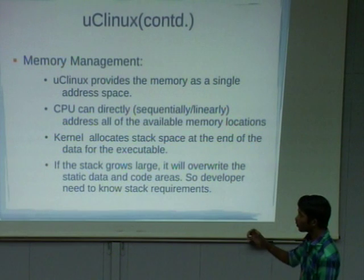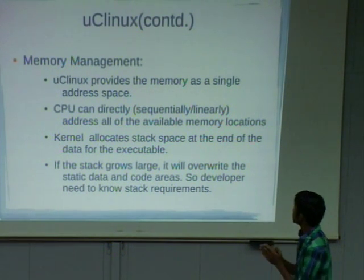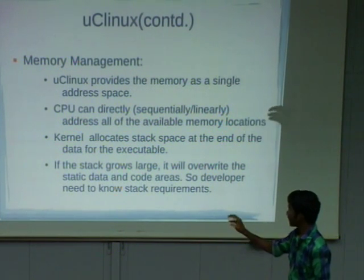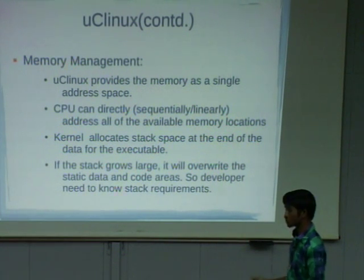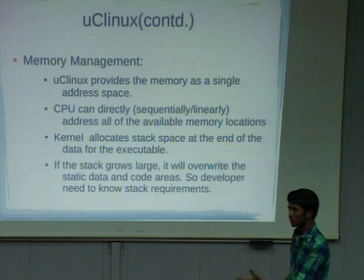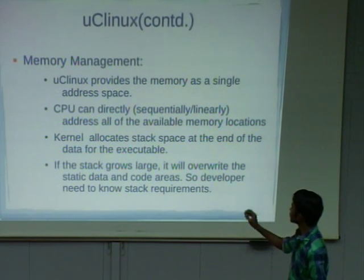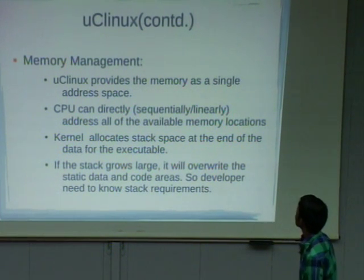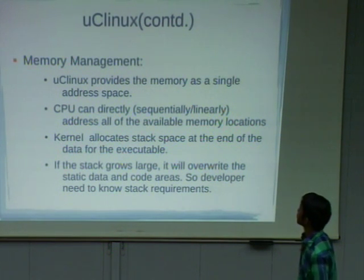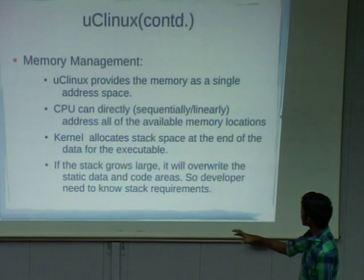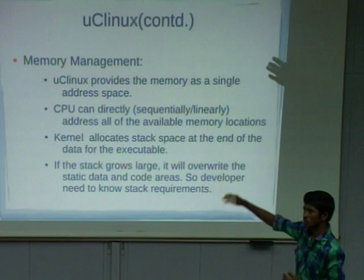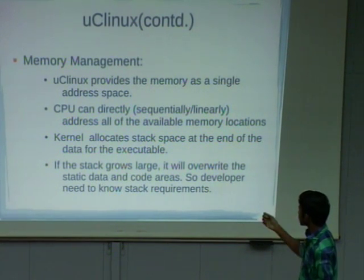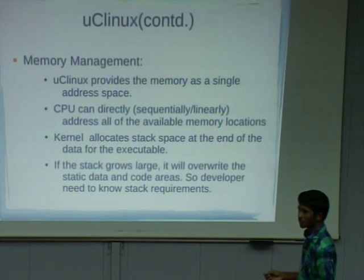How does memory management in UC Linux take place? In UC Linux, the entire memory is treated as a single address space. Whenever the CPU needs to access data, it directly accesses memory without sending a request to an MMU. In general architectures, the CPU requests the MMU, but here there is no MMU, so the CPU directly accesses data. To allow this, we modify the kernel. However, there are problems: if the kernel allocates some stack space for a process and the stack grows, there is a chance to override the data and code segments of that process. So developers must know their stack requirements before implementing their programs.